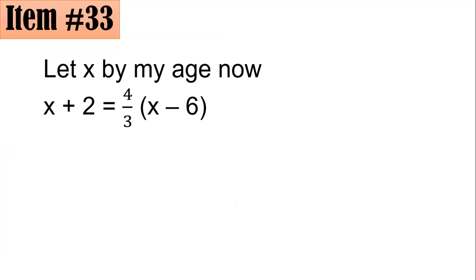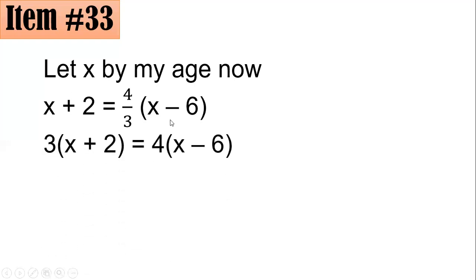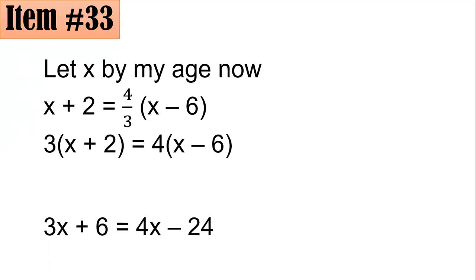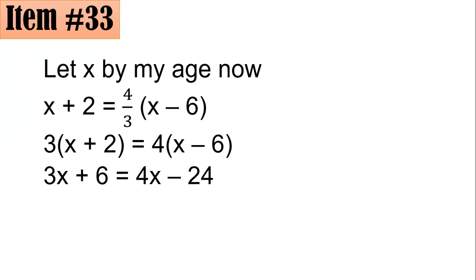My age six years ago will be x minus 6. My age two years from now is four-thirds of my age six years ago, so I have the equation x plus 2 equals four-thirds of x minus 6. I multiplied both sides by 3 to clear fractions, giving 3 times (x plus 2) equals 4 times (x minus 6). Using the distributive property: 3x plus 6 equals 4x minus 24.